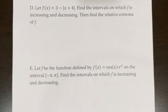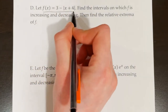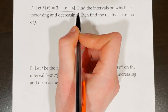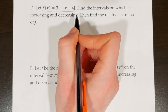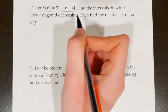Let f of x equal 3 minus the absolute value of x plus 4. Find the intervals on which f is increasing and decreasing, then find the relative extrema of f. When you see a really easy function like this one, where you can easily picture it in your head, you could graph it out easily. What you may want to do is just graph it out, because going through the full algebraic process is a lot of work.